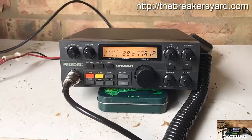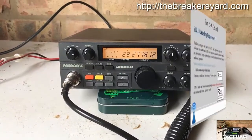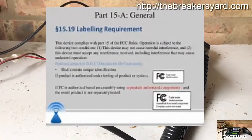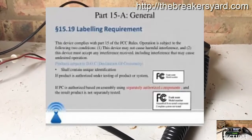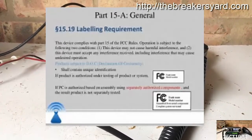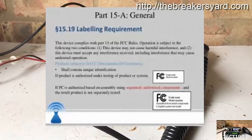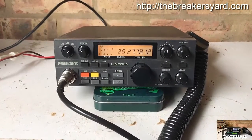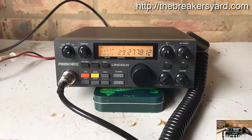Also, according to the FCC, you must use an FCC-certified CB unit in the United States. FCC-certified CB units have an FCC-certified label placed on the radio by the manufacturer. CB is intended for short-range local communications only.